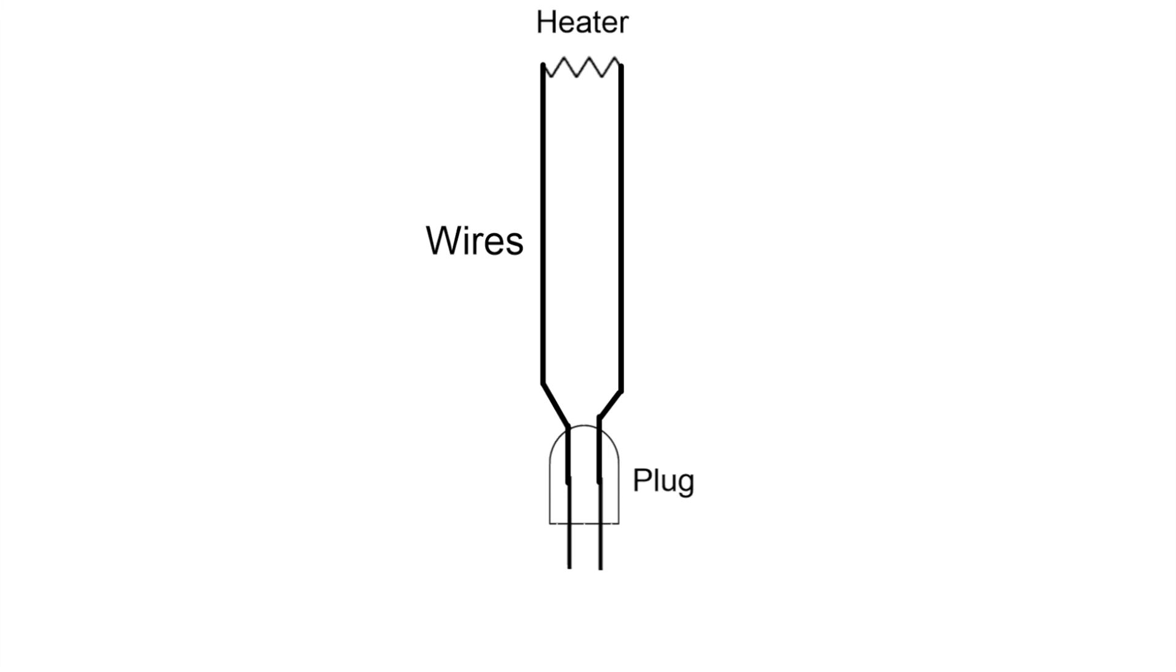If a conductor breaks no electricity can flow and this is called an open circuit. The meter will read open circuit just like earlier when we were not touching the test leads together. Likely there is mechanical damage to the cord and you will need a new cord or you will need to repair your cord.